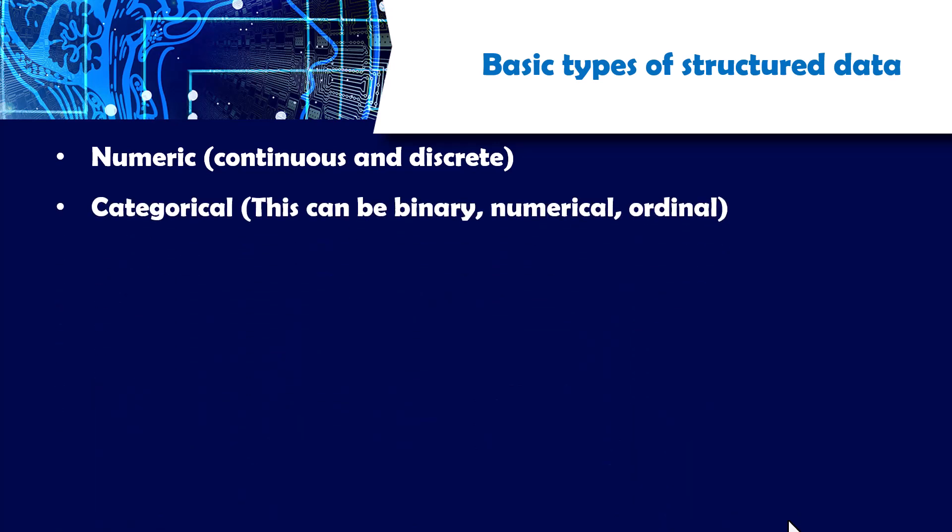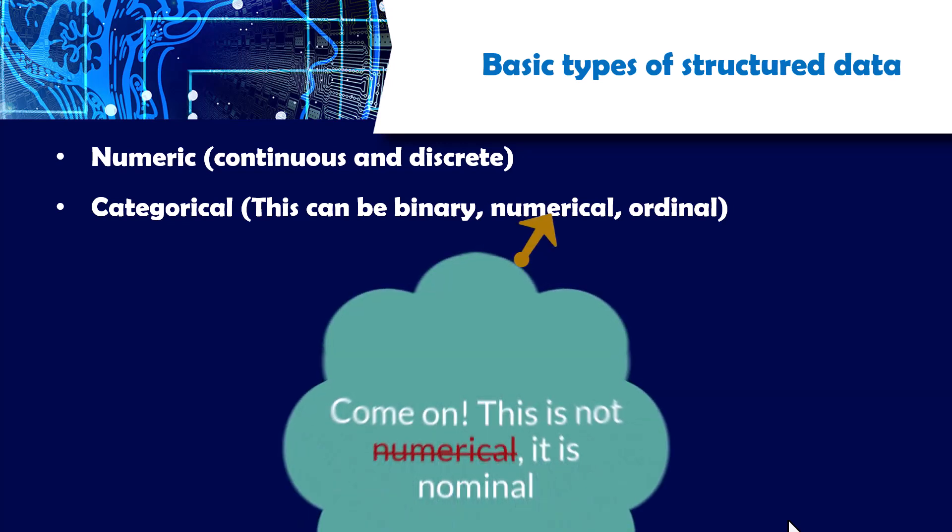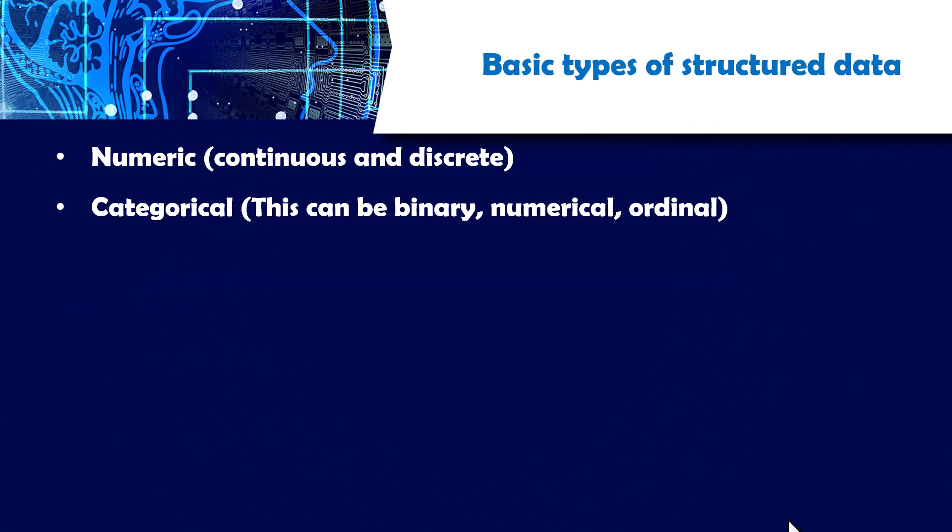Then there is categorical data as another type of structured data. Categorical can be in different formats. This can be binary in form of zeros and ones or ones and zeros. There is numerical which doesn't take on a given order, then there is ordinal which takes on a given order.